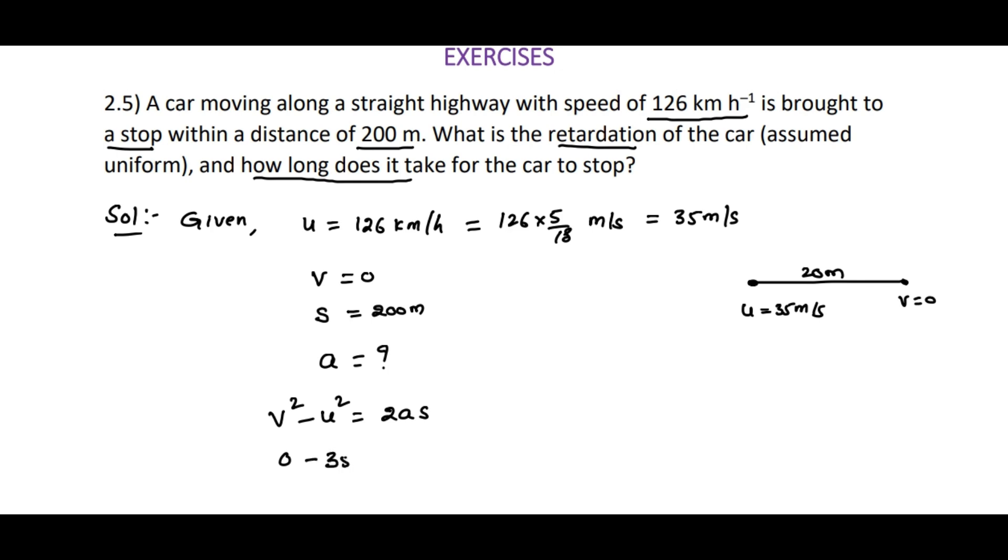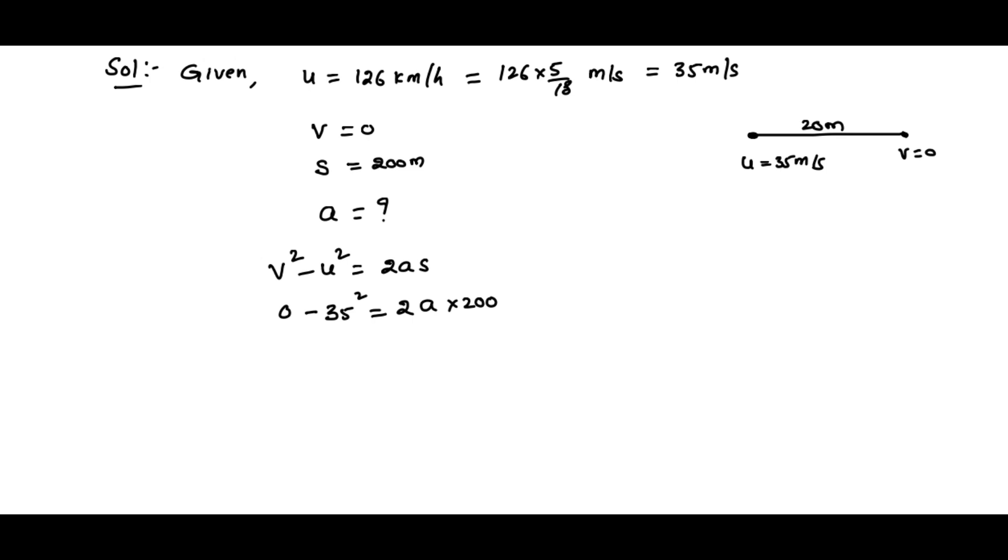From this, 0 minus 35 squared equals 2 times a times s is 200. From this, a value will be minus 35 into 35 divided by 2 into 200, that is equal to minus 49 divided by 16, it is equal to nearly minus 3.06 meters per second squared.